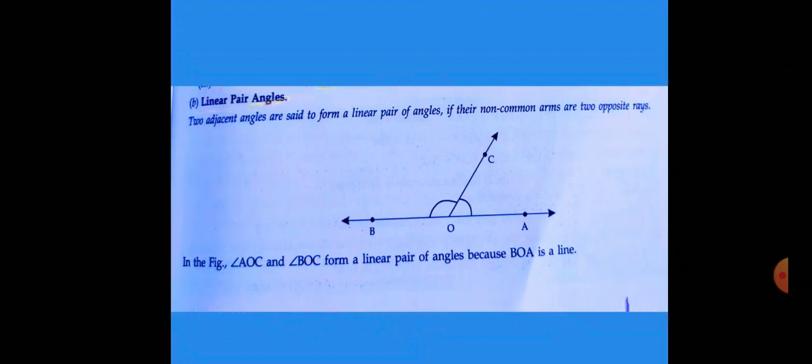Linear pair: The adjacent angles are set to form a linear pair of angles if their non-common arms are two opposite rays. In the figure, angle AOC and angle BOC form a linear pair because BOA is a line. The sum of linear pair is always 180 degrees.